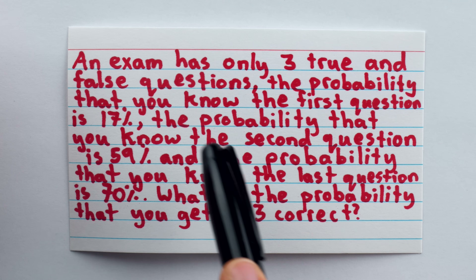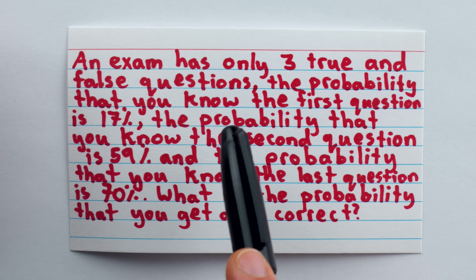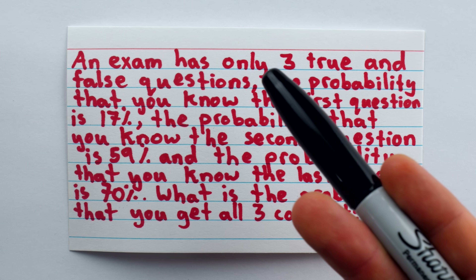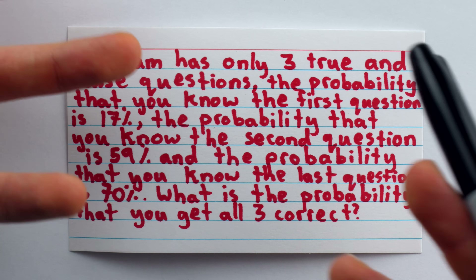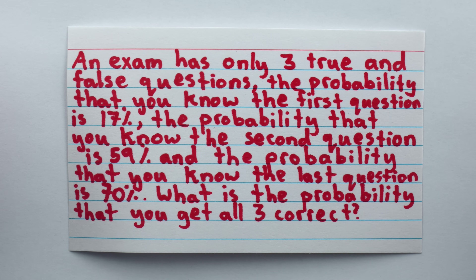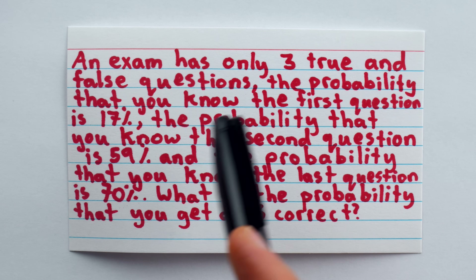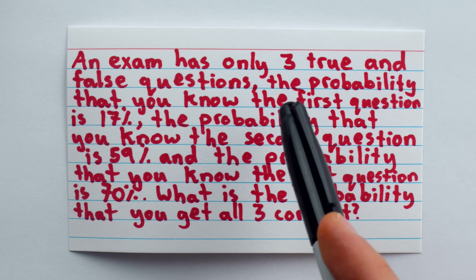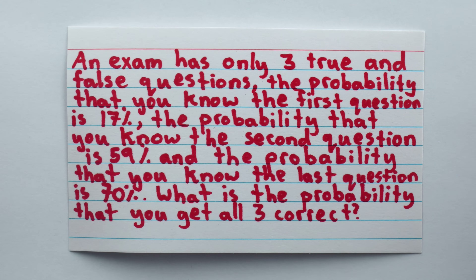Then there's the wording about the probability — 'the probability that you know the first question.' There's a 100% chance you know the question, right? You're going to read it; it's going to be on the test. It's not like you have to figure out the question and the answer. It should say something like 'the probability that you know the correct answer to the first question is 17%.'